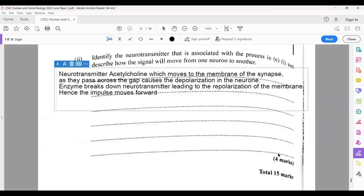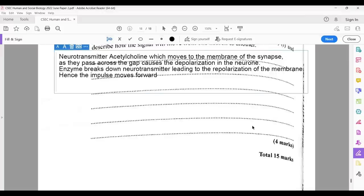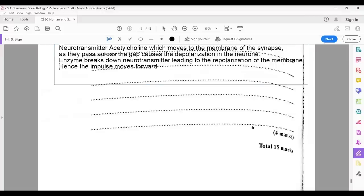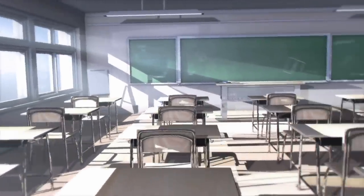So do let us know if you would have used different examples, but this would bring an end to the May-June 2022 Human and Social Biology paper. Do remember to subscribe to encourage us to release more exam papers. Thank you.